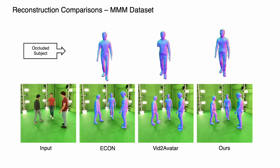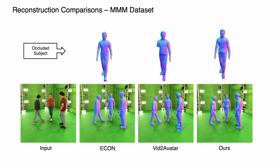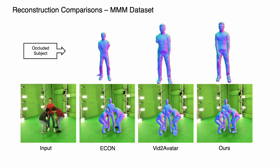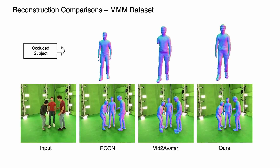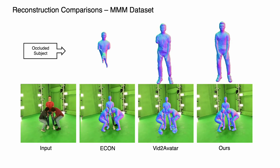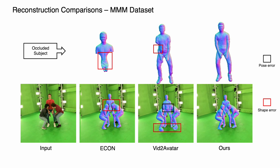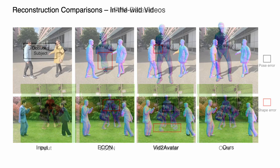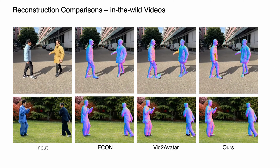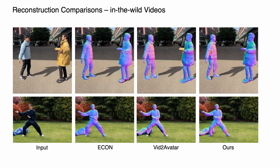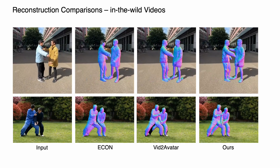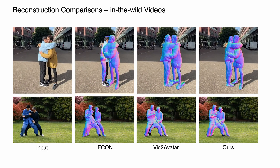We consistently observe high-quality results on our self-captured dataset. Our method reconstructs plausible humans in 3D despite strong human-human occlusions. We highlight the errors of the baseline methods with boxes. We further conduct qualitative comparisons on in-the-wild videos. Multiply performs consistently better than other baseline methods and is robust against severe occlusions and complex human motions.